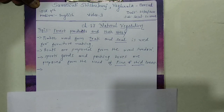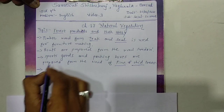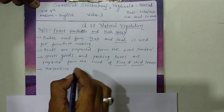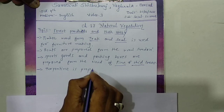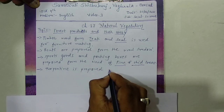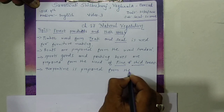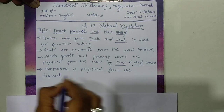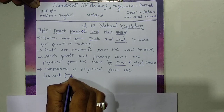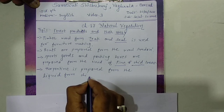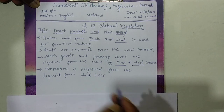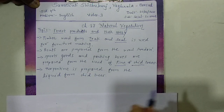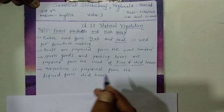Next, turpentine is prepared from the liquid of deodar trees. If you remember, turpentine is a product or liquid which is used to mix with paint or color to make the color thick.